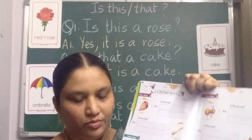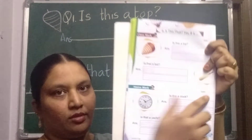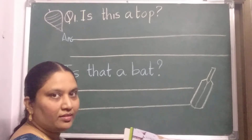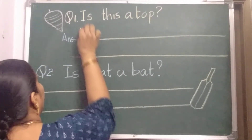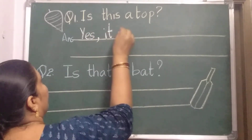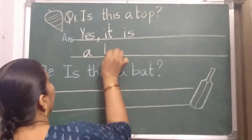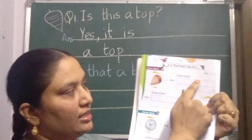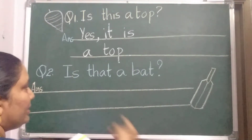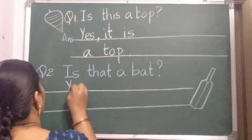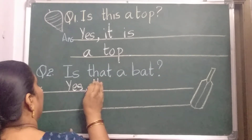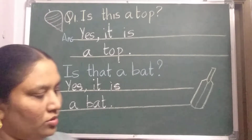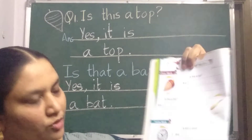Wait, I will write on the board and show you. Here, you write the date two times — up and down. Two lines are there. Is this a top? In the first line: Yes, comma, it is a top. Like this you should write. Next: Is that a bed? Yes, it is a bed. So today you should write in the practice book, page number 12 and 13 — two pages you should do.